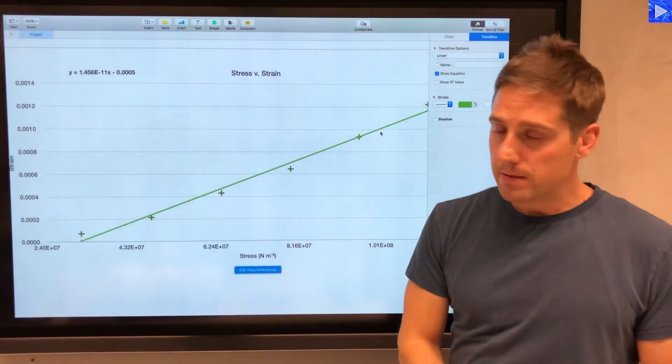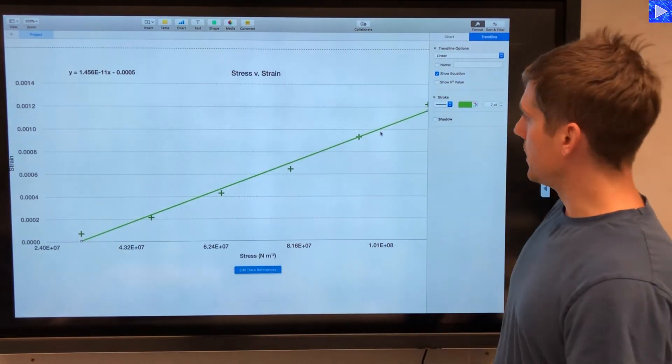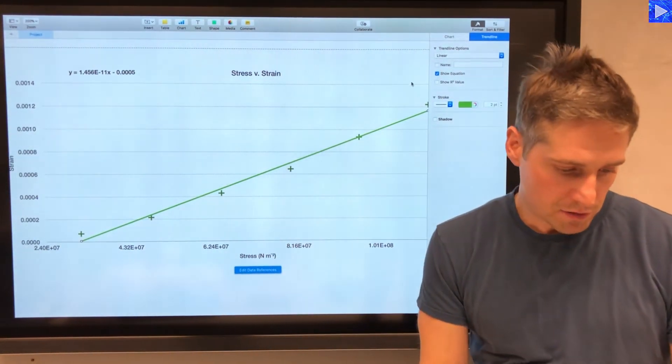So it's a linear line, i.e. it's a straight line, and I've ticked the option there to show equation.